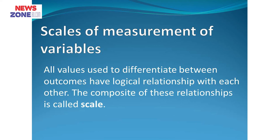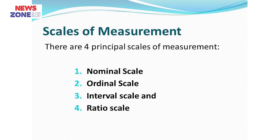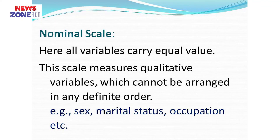Now let us discuss about scales of measurement of variables. There are four scales: nominal, ordinal, interval, and ratio. Nominal scale measures qualitative variables that cannot be arranged in any definite order — all variables carry equal values. Examples are marital status, occupation, and sex. There is no top-to-bottom order possible, so these are nominal scale variables.